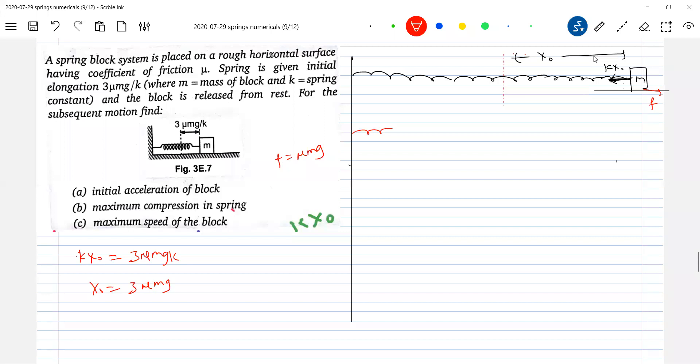Then as it accelerates, the speed of the block will increase. Somewhere when the spring force becomes equal to friction... Sir, he came out to initial elongation that is x0 equals to 3μmg by k.